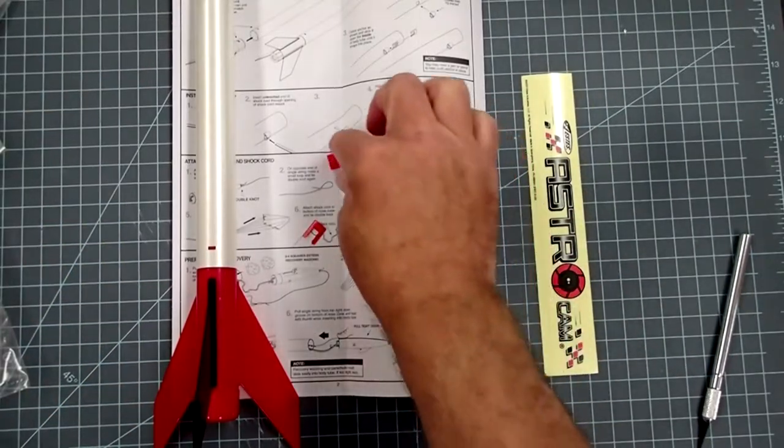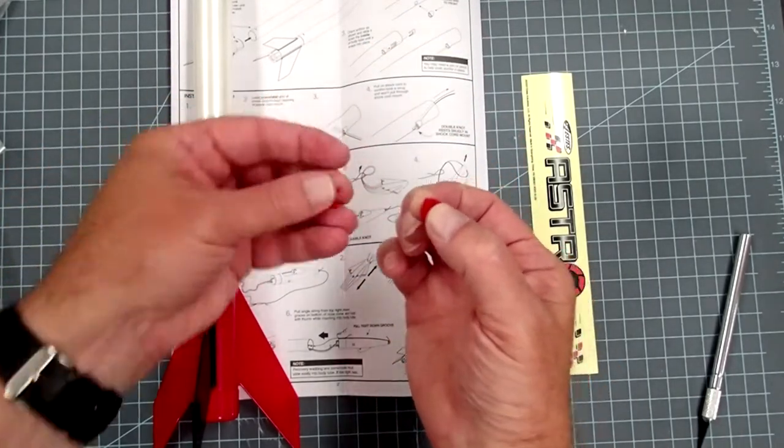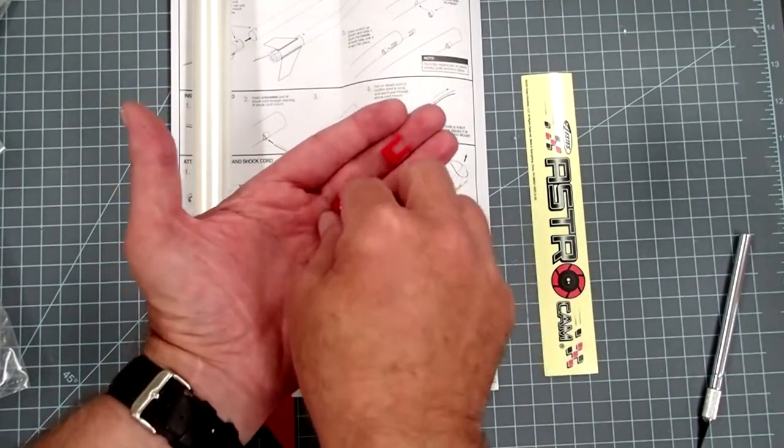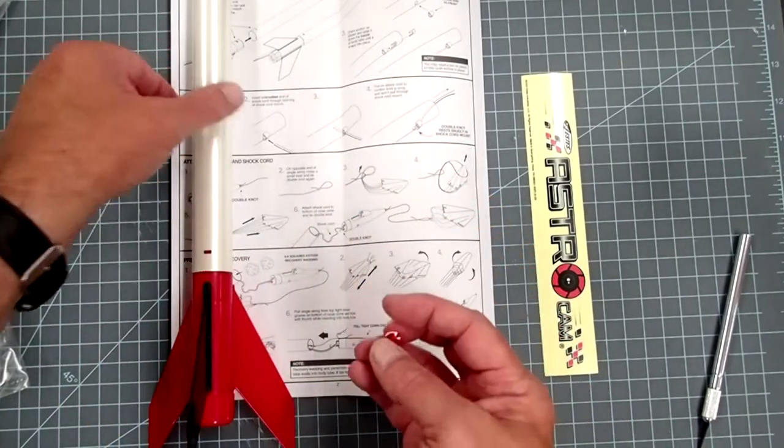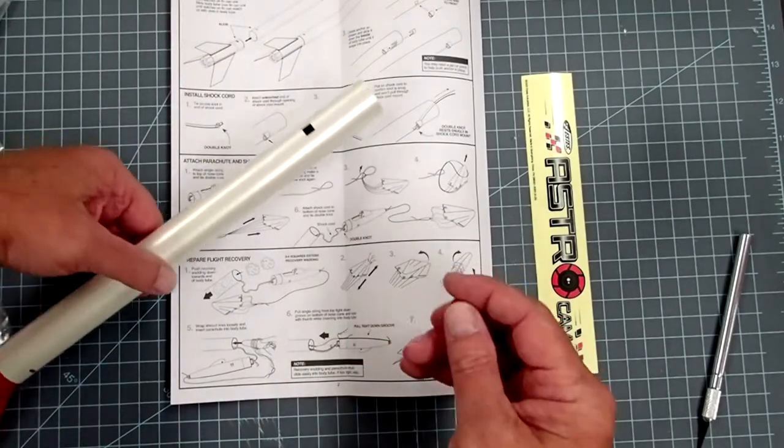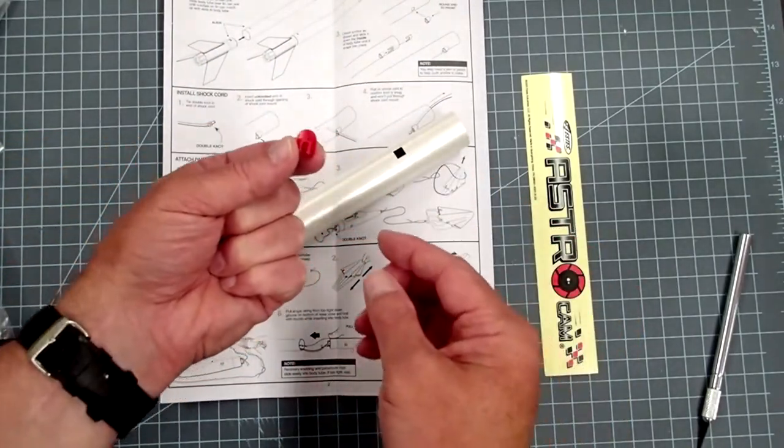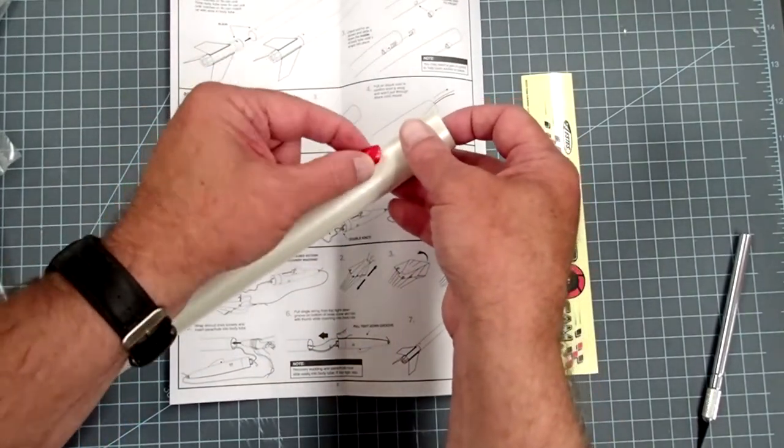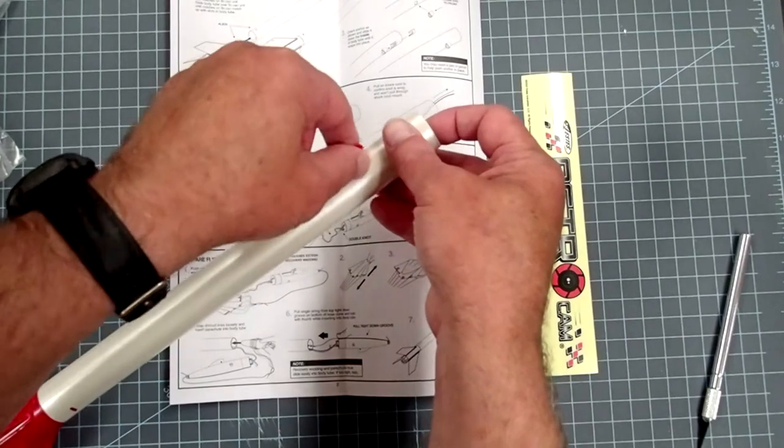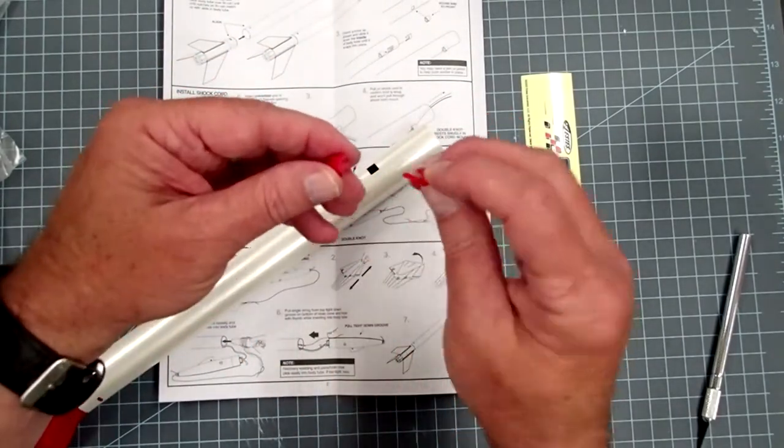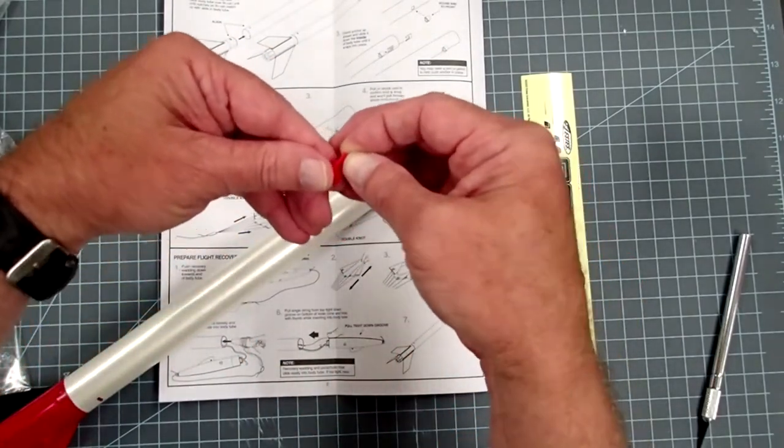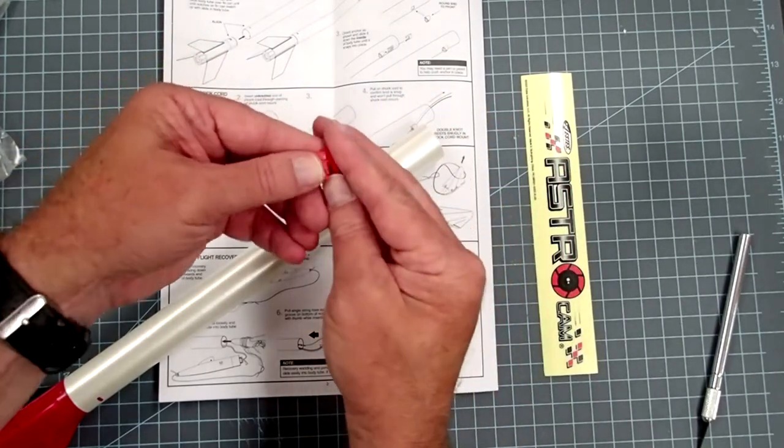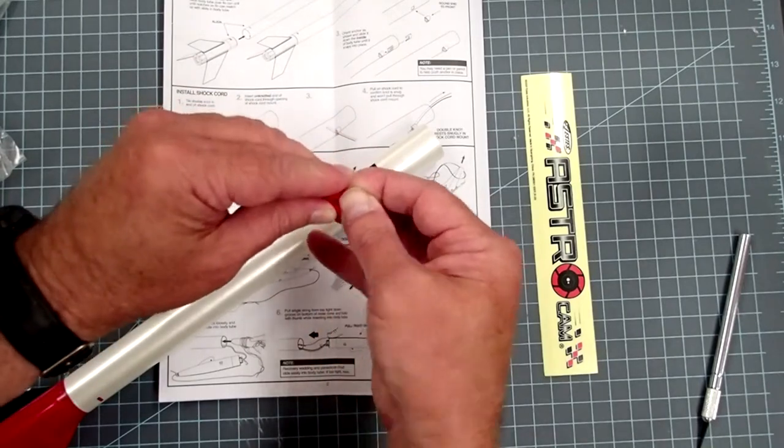Our next task is to install the shock cord mount. This comes in two small pieces here, and this is in the same package with the fin can. And so this part here, the rounded edge faces up and goes into this hole. And before I put that on, I'm going to show you just how the other part slides on here like this. And it will snap into place. So now I have to unsnap it here.